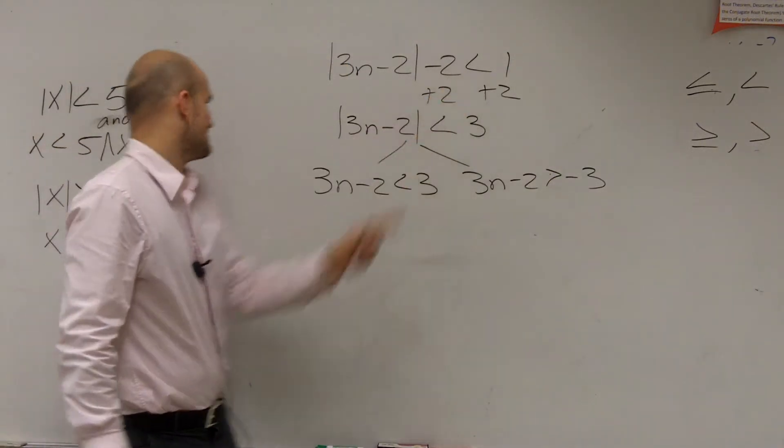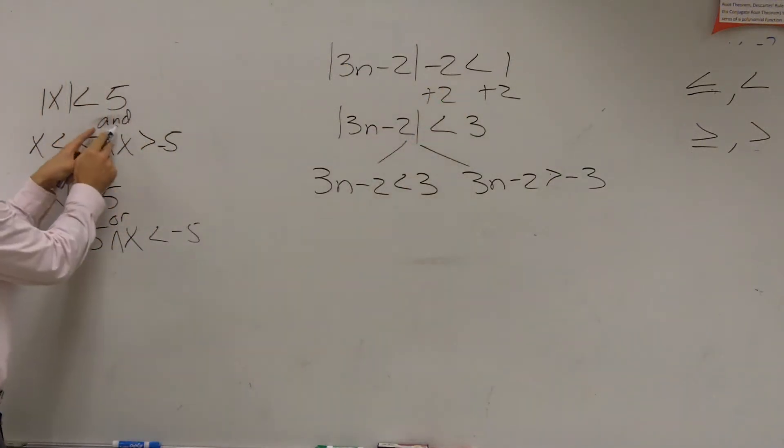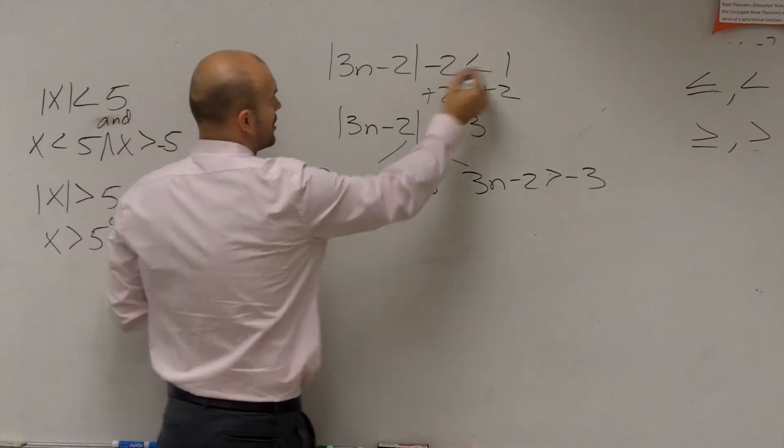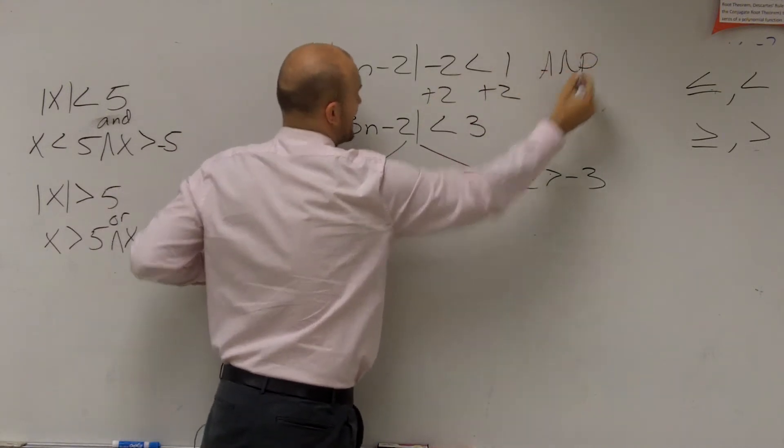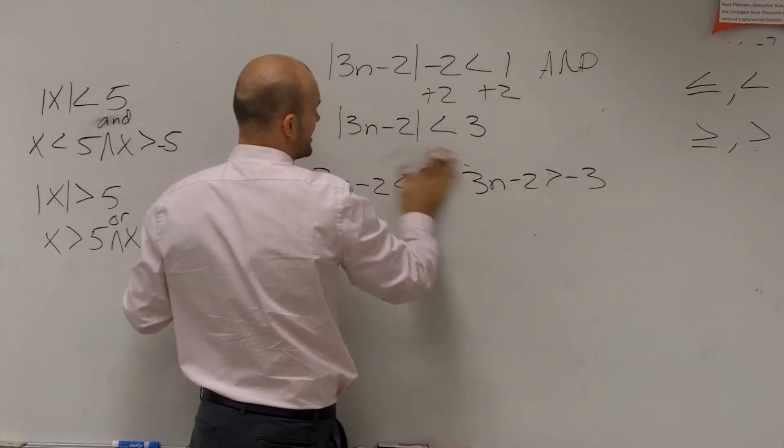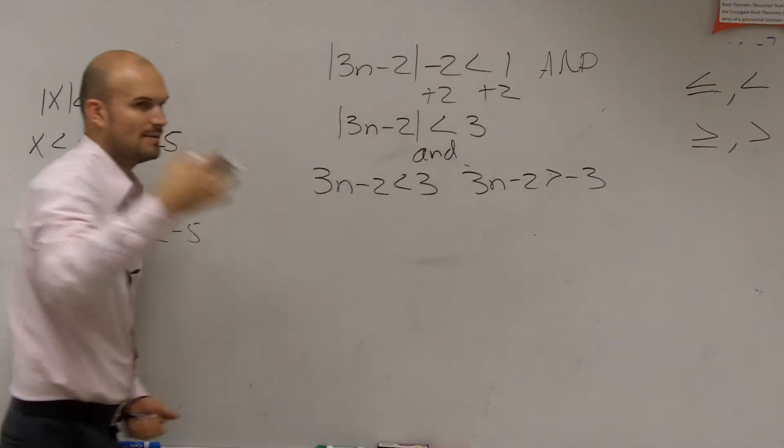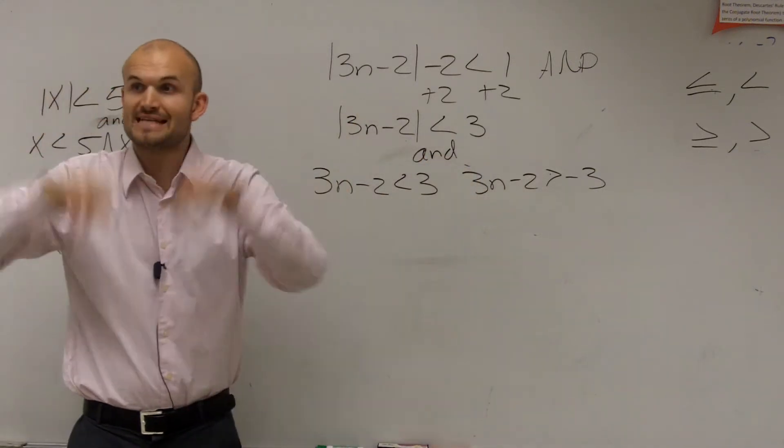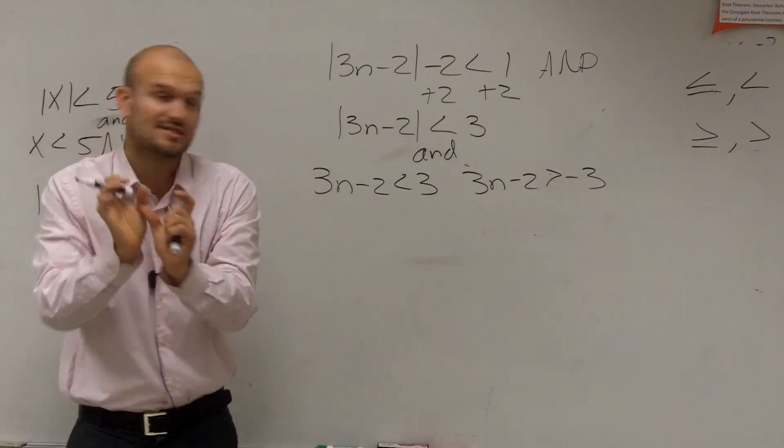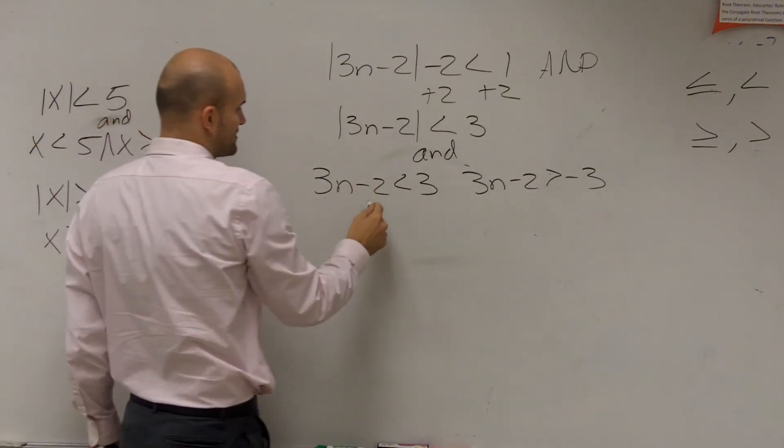So I look back and say, what statement is this? When it's less than, that means it's an AND statement. I like to write AND so I know. My solution is going to be this and that. Remember, think about the Venn diagram. The AND is the intersection. So let's solve these. Plus 2, plus 2. 3n is less than 5. Divide by 3.